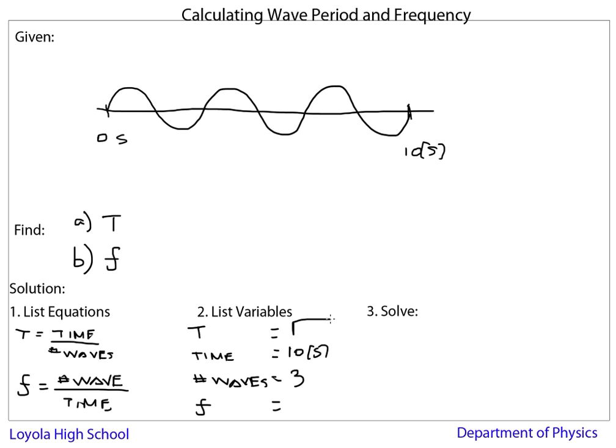And the frequency is what I'm also trying to find, so I don't know. So if I don't know it, I just put a box here. So let's solve here. So for the period, it's the time per wave. So I have 10 seconds, and I have three waves. So that's 3.33 seconds. And you box your answer.